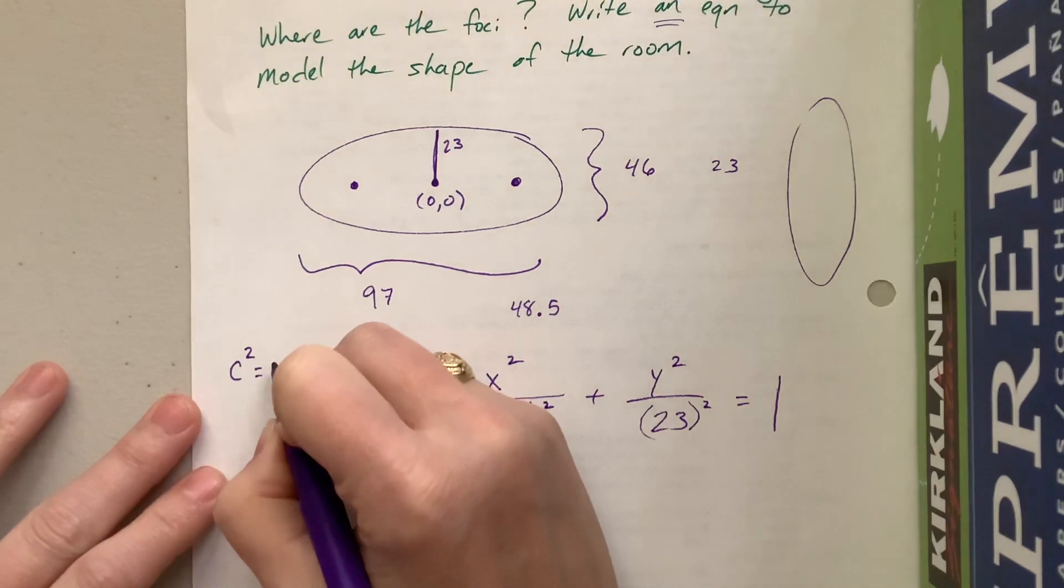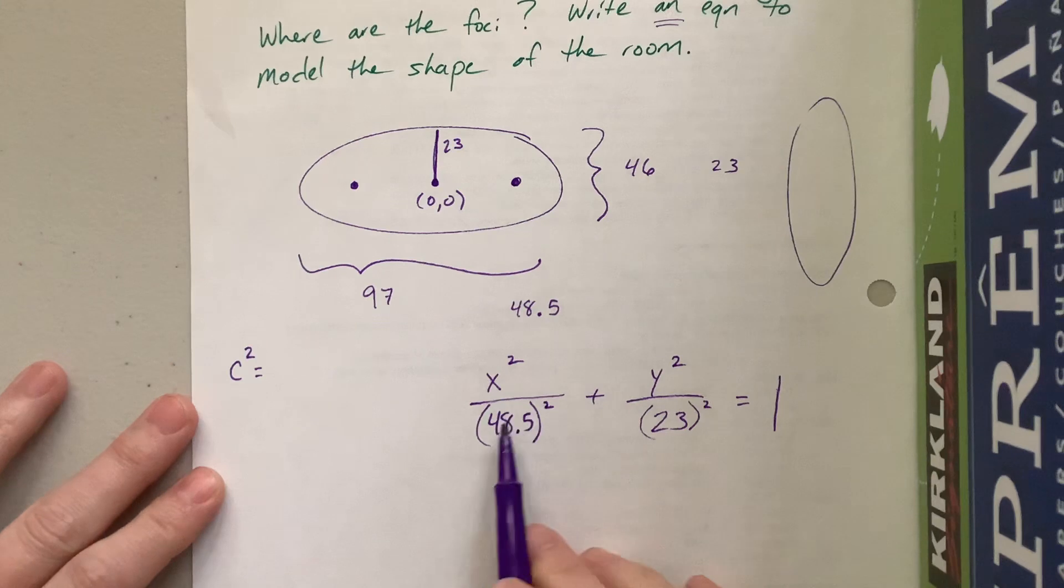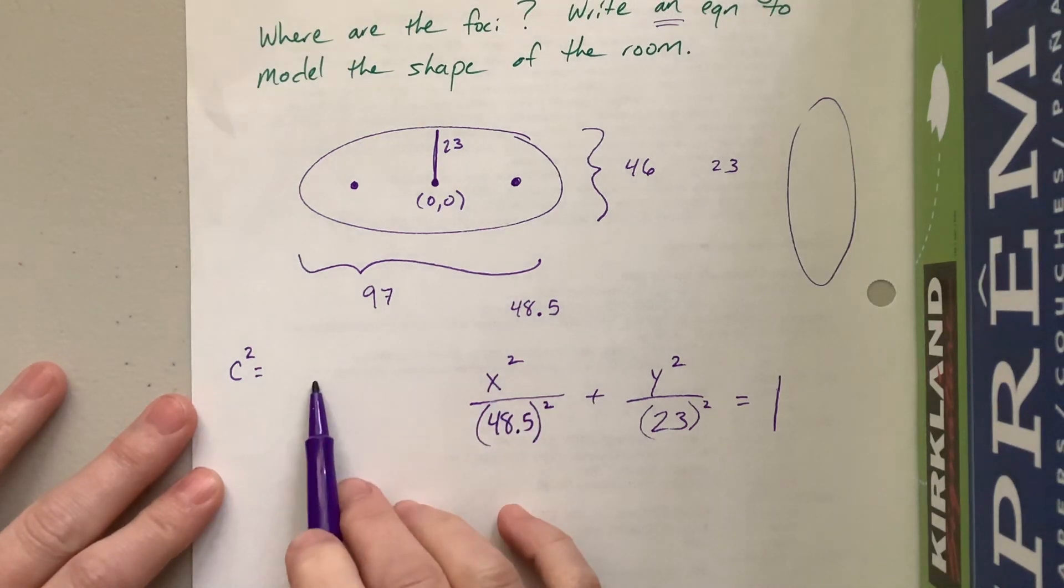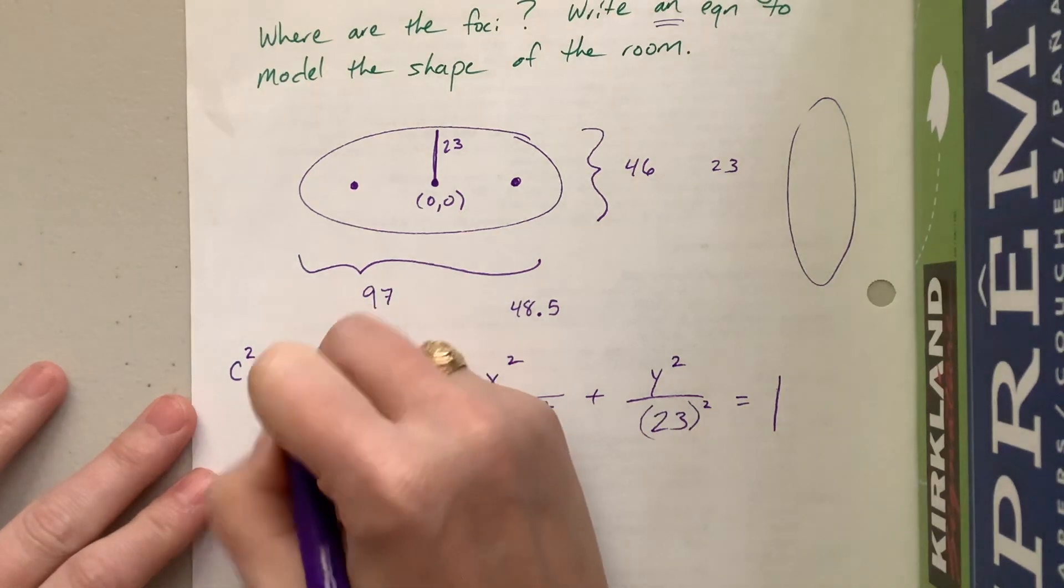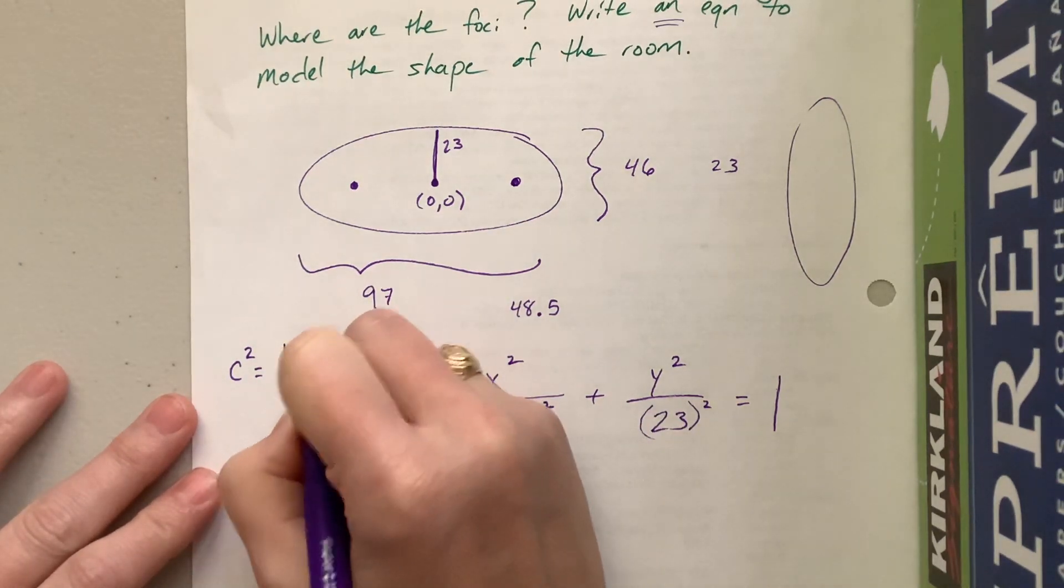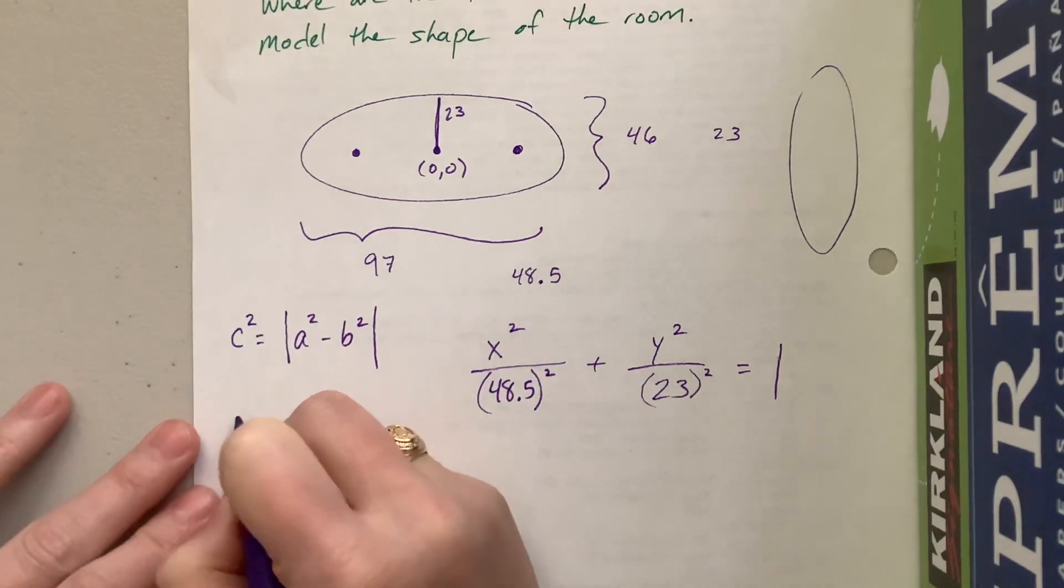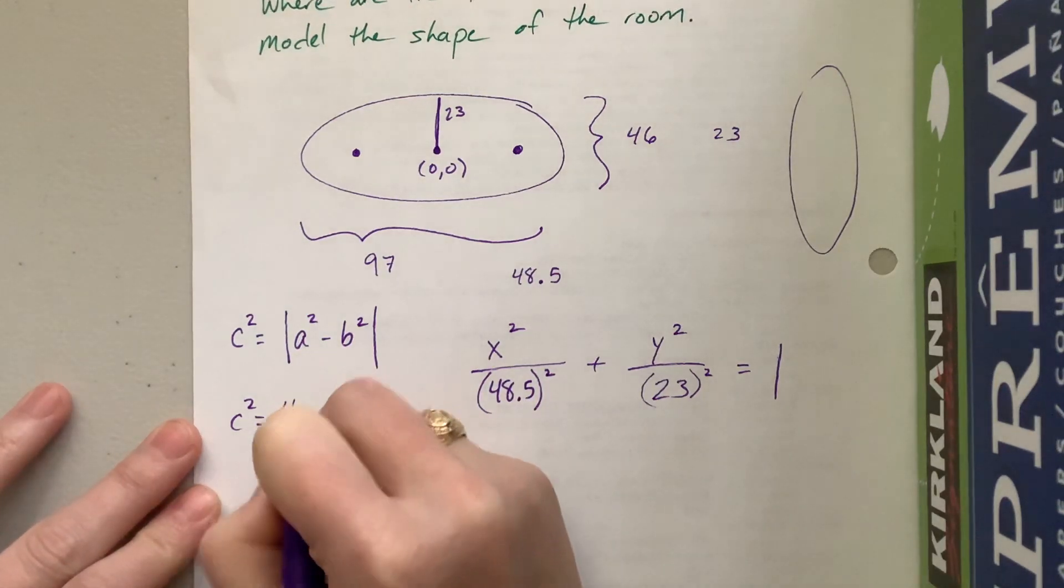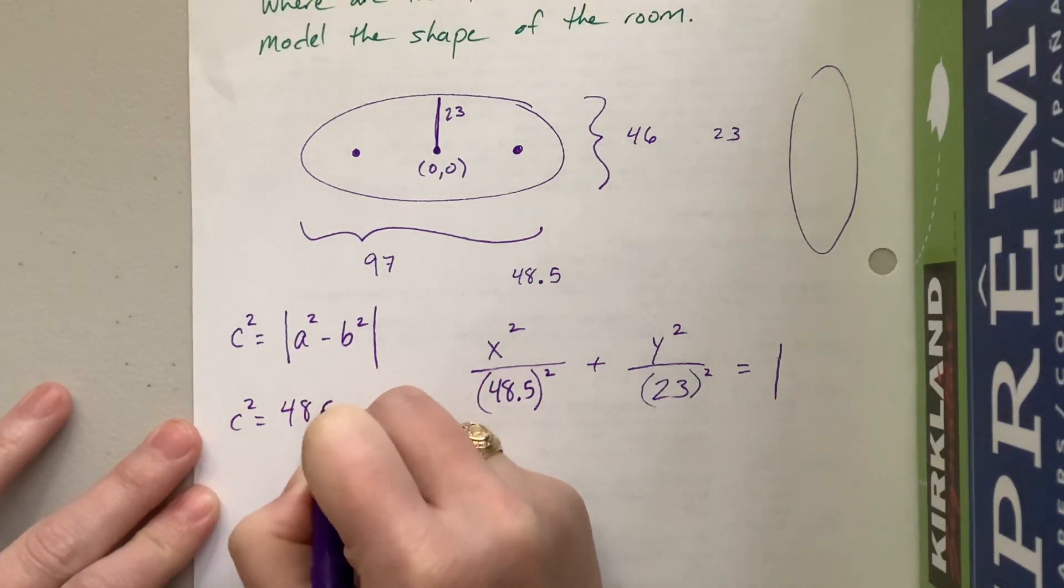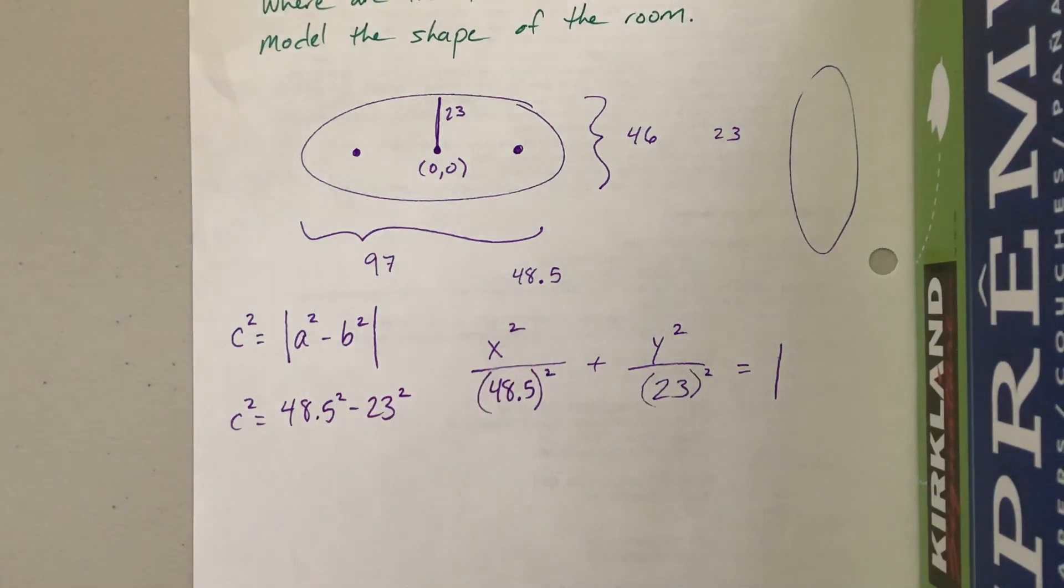And now you'll remember with ellipses that c squared, which helps us find the focus, is, what I remember is if there's a plus sign here, this equation has the opposite. So with an ellipse, it's a plus and then a minus here. With the hyperbola, it's a minus here, and then a plus over there. So we'll take the absolute value of a squared minus b squared. Oh, and now I do need a calculator, dang it. Okay, well, so c squared is equal to, this number is bigger than that one, so we don't need the absolute value.